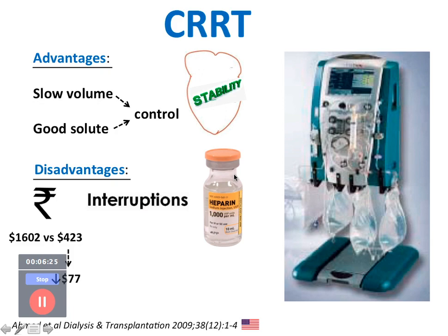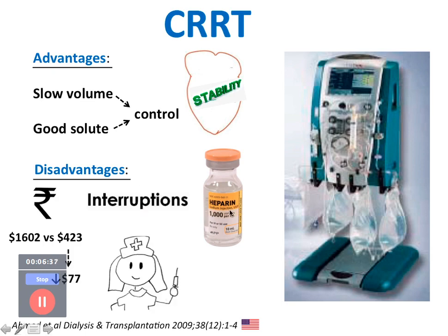Another disadvantage of CRRT is that it requires a lot of heparin to keep the circuit patent; otherwise blood clogs the filter, causing longer interruptions. CRRT also requires more manpower — a dedicated nurse for 24 hours, and potentially an additional nurse for other tasks. In Australia, ICU patients on CRRT would have one nurse fully committed to the CRRT machine, making it labor-intensive.